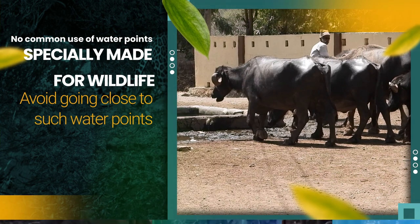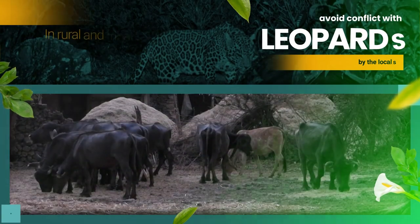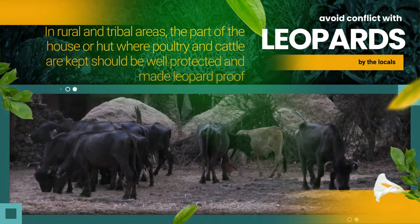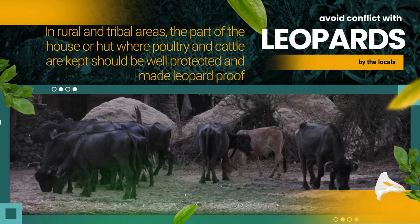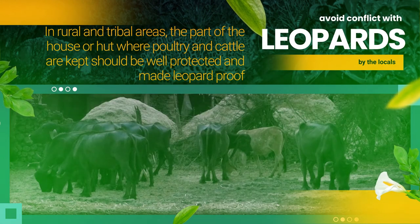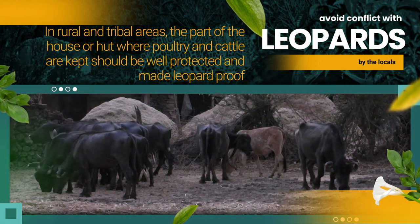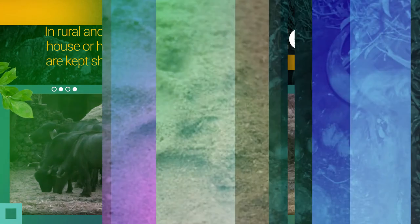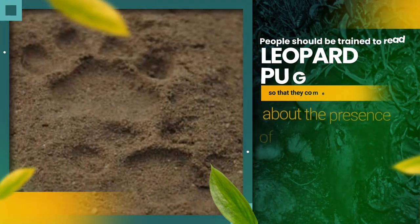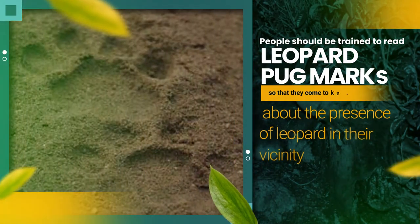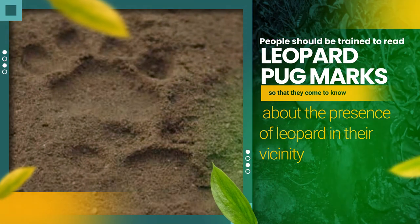In rural and tribal areas, the part of the house or hut where poultry and cattle are kept should be well protected and made leopard-proof. People should be trained to read leopard pug marks so that they come to know about the presence of leopards in their vicinity.